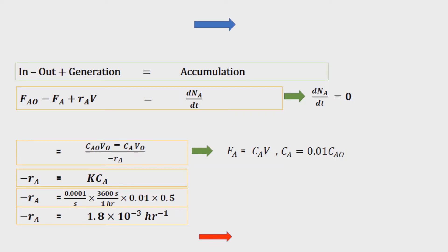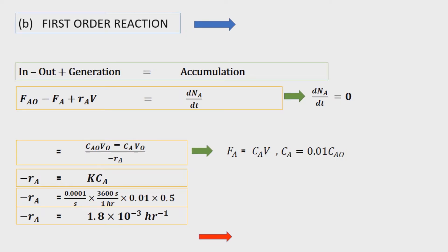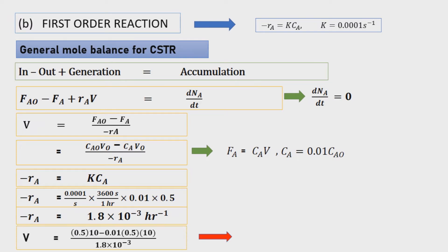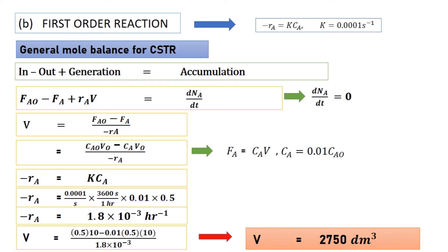For Question B, this involves first order of reaction, where negative Ra equals K times CA. Same as Question A, we write the general mole balance for CSTR, make V the subject, substitute the values, and we get 2750 decimeter cubed.